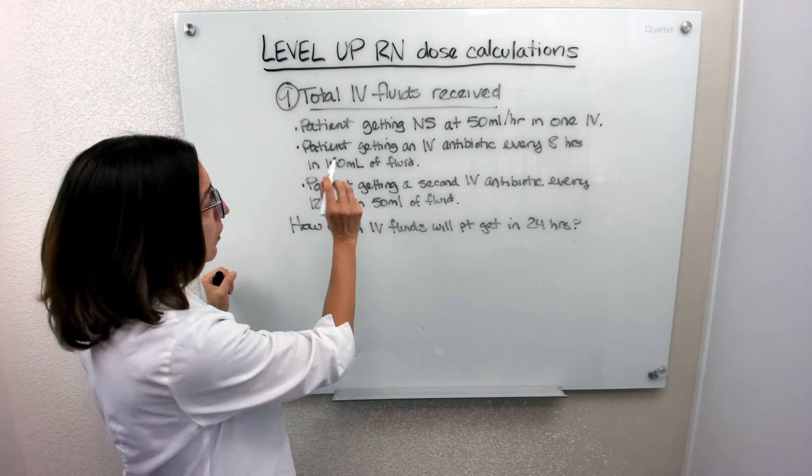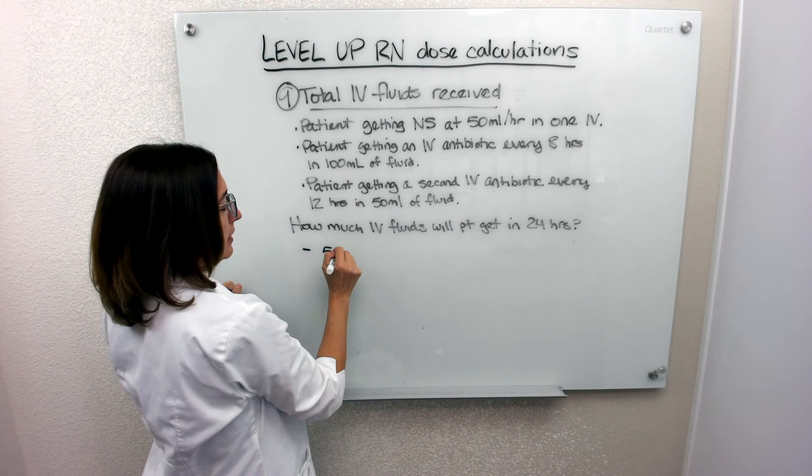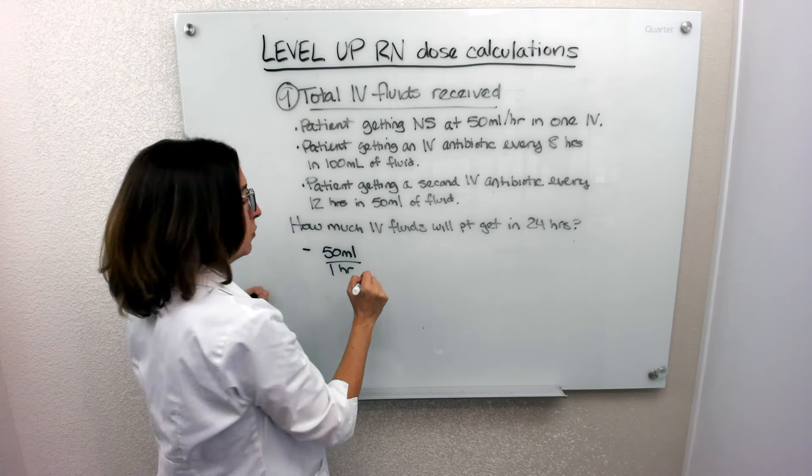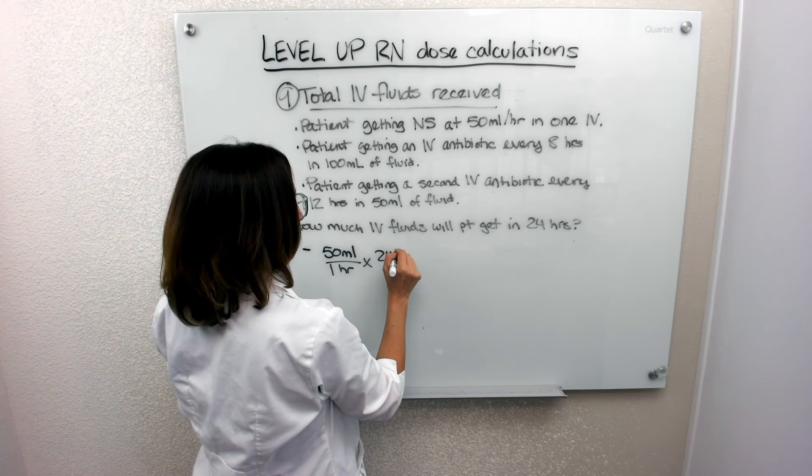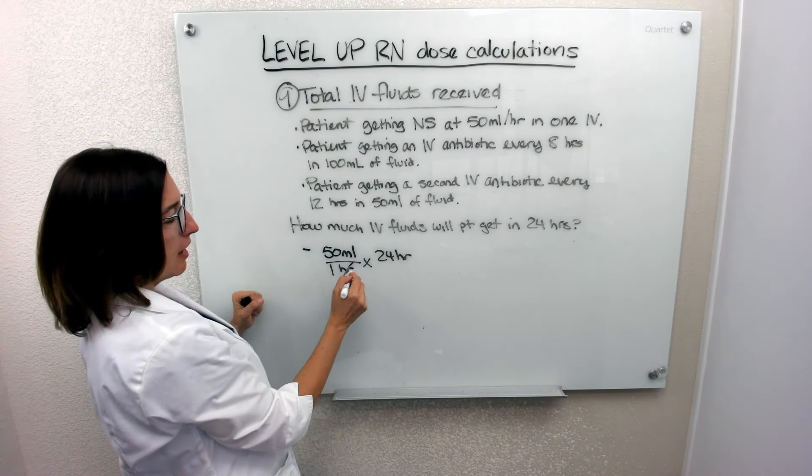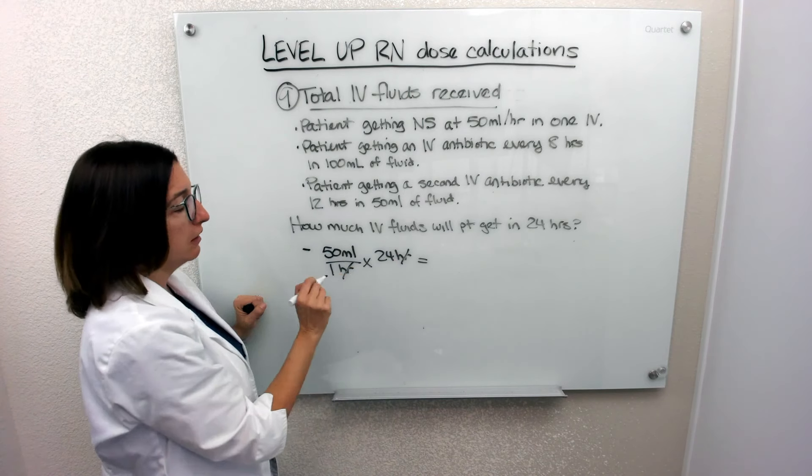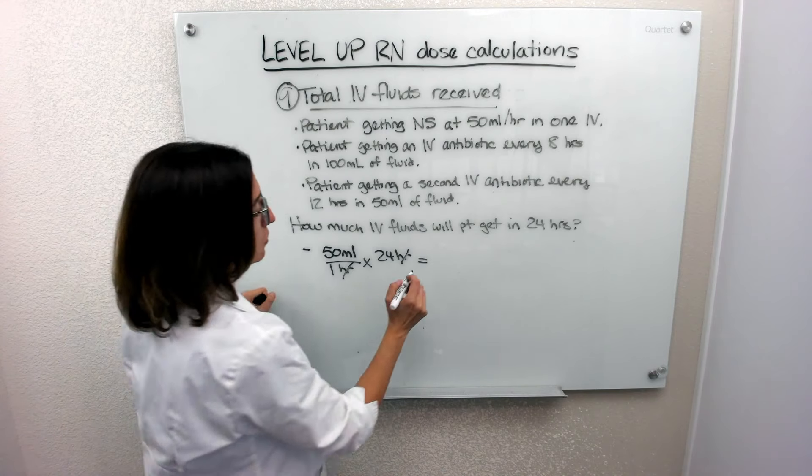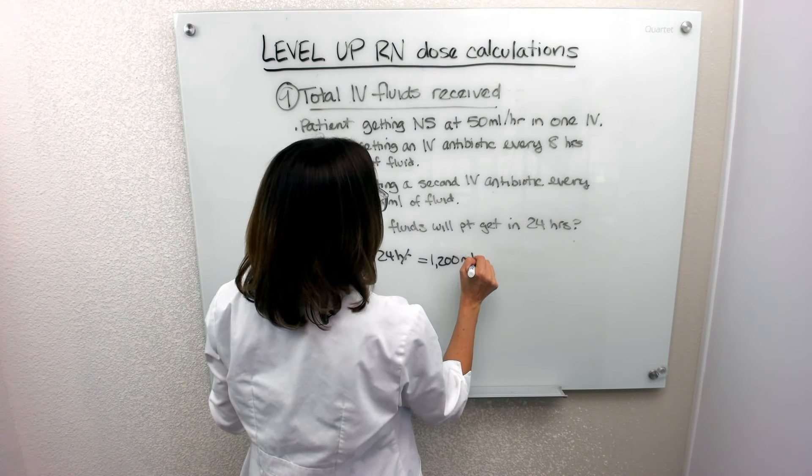So for the normal saline, we know that the patient is getting it at 50 milliliters for each hour. So if we multiply times 24 hours, cross off our hours, that will give us how many milliliters they're going to get over a 24-hour period of time. So if we do that math, we end up with 1,200 milliliters.